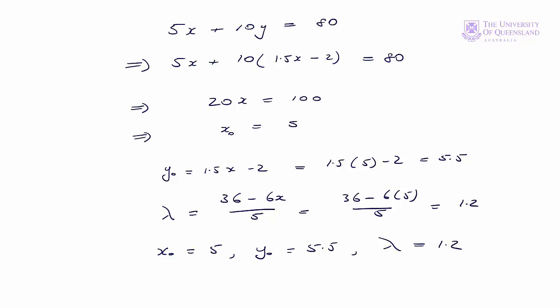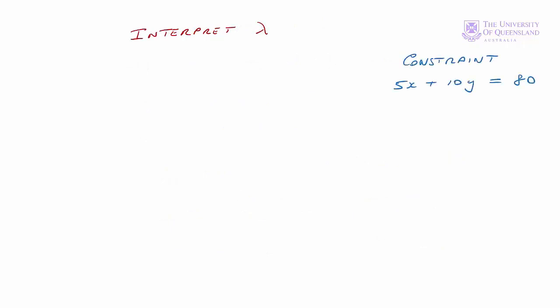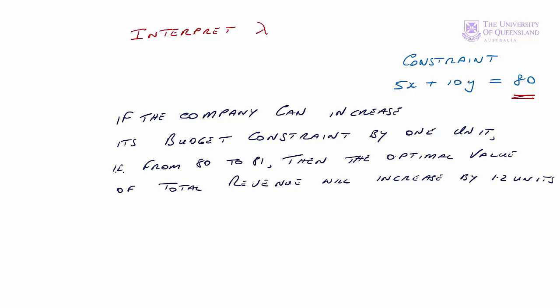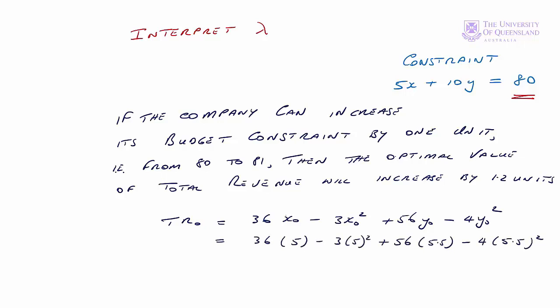Next we interpret lambda. The constraint was 5x plus 10y equals 80. We interpret lambda by thinking about increasing the right-hand side of the constraint by one unit to 81 — in that case the optimal value of the objective function will increase by 1.2 units, the value of lambda. To finish, the optimal value of total revenue is found by substituting in the optimal values of x and y, giving 292. So if the firm finds an extra unit of the constraint, it can increase its total revenue from 292 to 293.2.